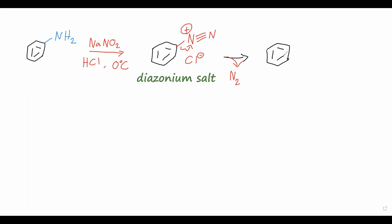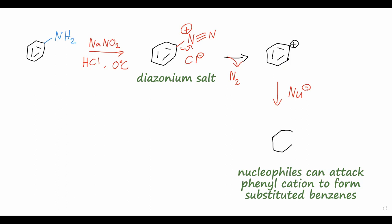So we have this benzene ring with a positive formal charge on one of the carbons. Now remember, we still have a fully aromatic ring, so this formal positive charge is not in the delocalized pi system of the benzene ring. So because that positive charge is not delocalized, this is going to be a very unstable intermediate. And if we add in any sort of nucleophile, I can just write NU minus, that nucleophile will happily attack the phenyl cation and give us a substituted benzene.